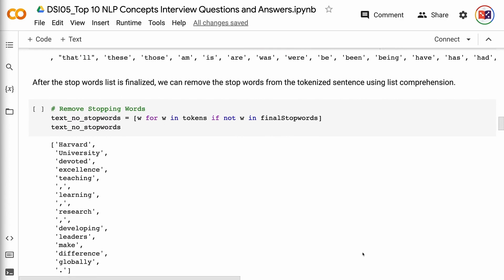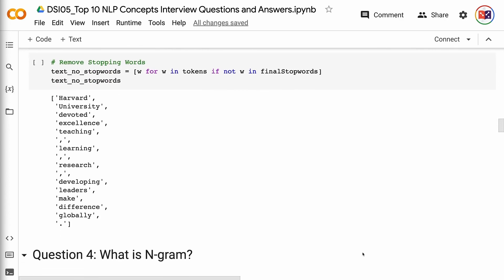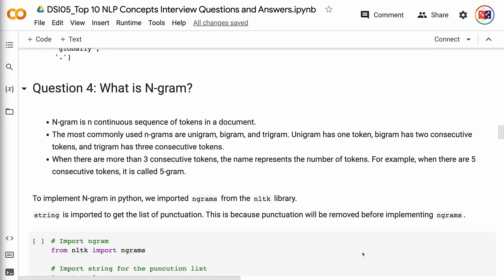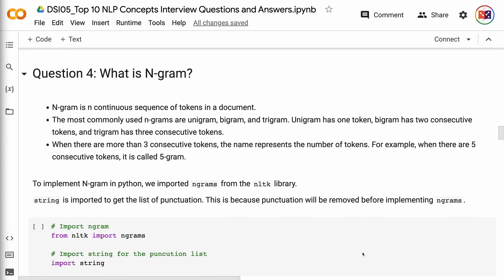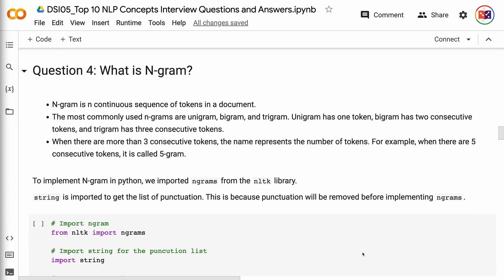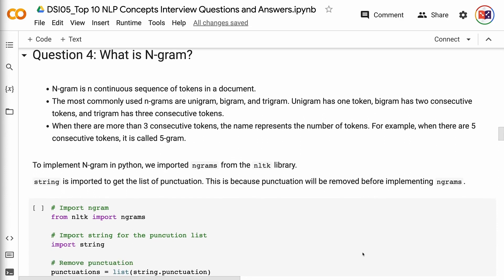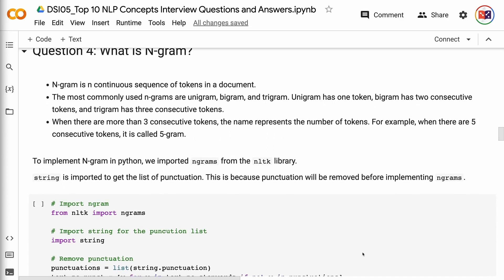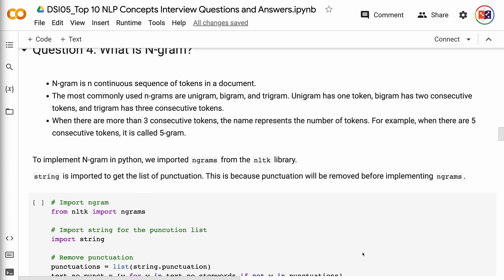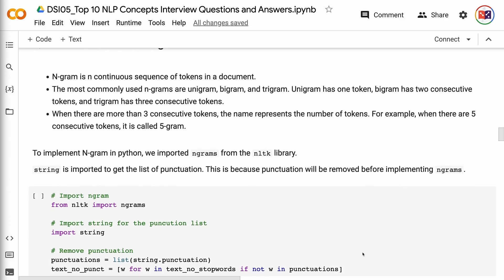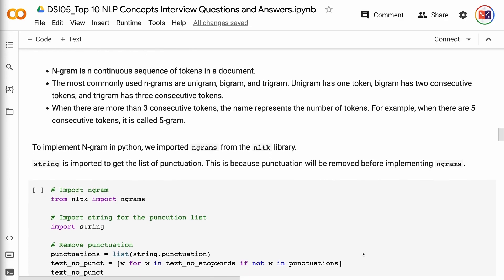Question 4: What is N-gram? N-gram is N continuous sequence of tokens in a document. The most commonly used N-grams are unigram, bigram, and trigram. Unigram has one token, bigram has two consecutive tokens, and trigram has three consecutive tokens. When there are more than three consecutive tokens, the name represents the number of tokens. For example, when there are five consecutive tokens, it is called 5-gram.